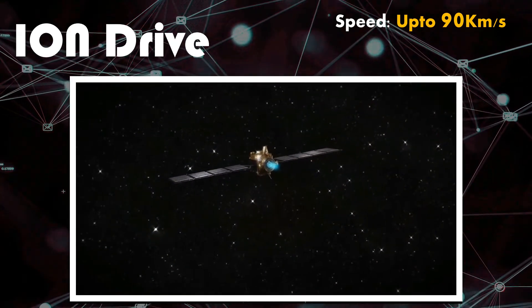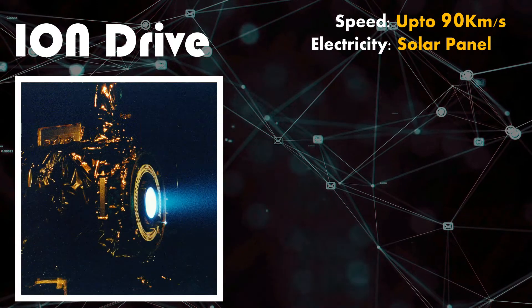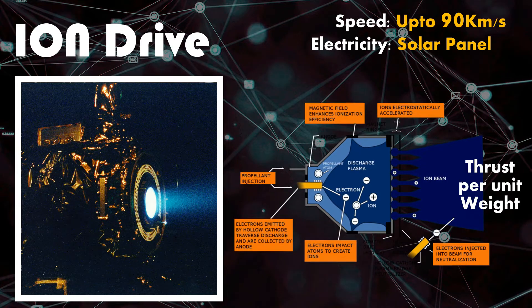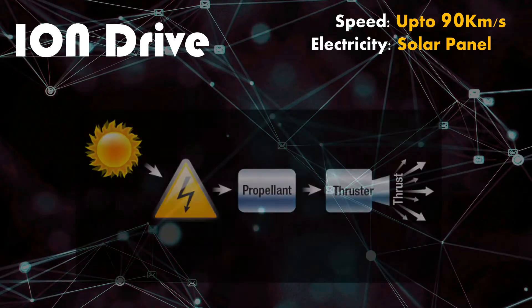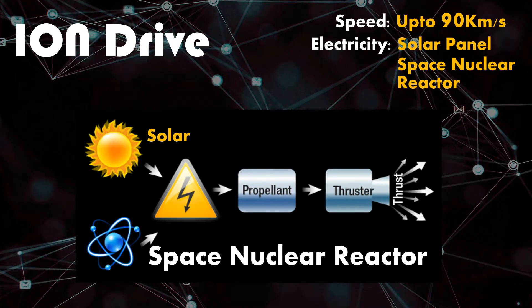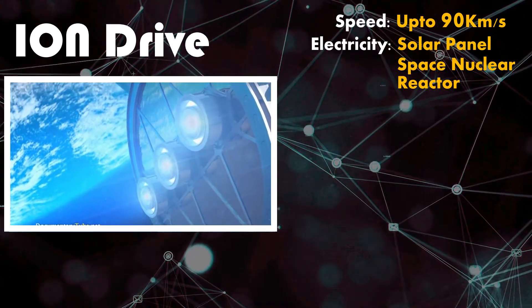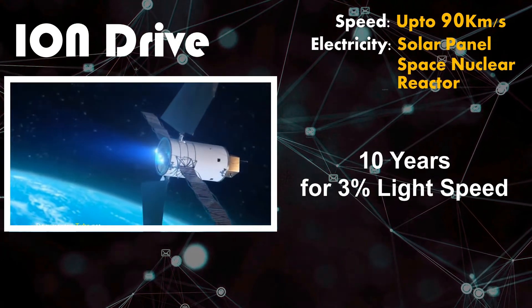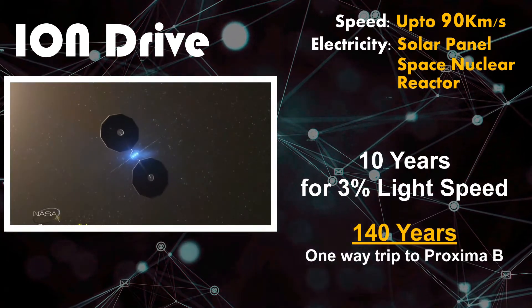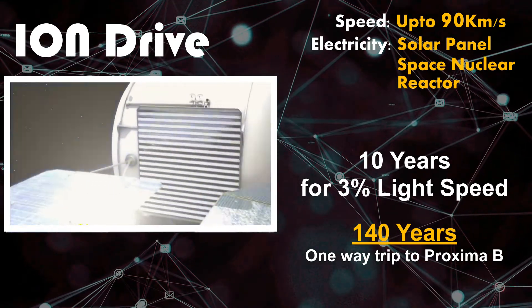The electricity requirements can be met with solar panels, making it 90% efficient drive. But the current technology of ion drives produces very less thrust per unit of weight. If we make a spacecraft for interstellar travel with ion drive, the energy requirement for such ion drives cannot be met with solar panel alone. We need to generate power using space nuclear reactors. Considering the electricity a typical nuclear power plant generates, it would take around 10 years for an unmanned spacecraft to reach 3% light speed. One-way trip to Proxima B can take up to 140 years with ion drive. Improvements in the design of ion thrusters could reduce the travel time, but not to that of an average human lifespan.